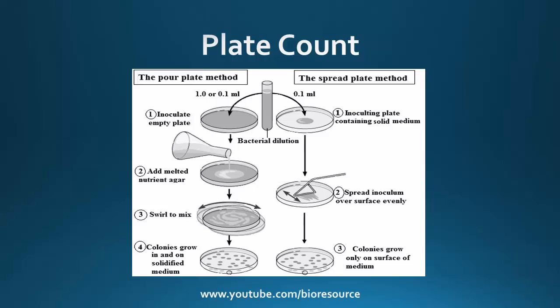In pour plate, the bacterial colonies are mixed with the agar-containing medium at around 50 degrees, and that is poured on the petri plate. The problem is that bacteria which are sensitive to temperature will not grow in this case, so it is not useful for cultures that are sensitive to temperature.